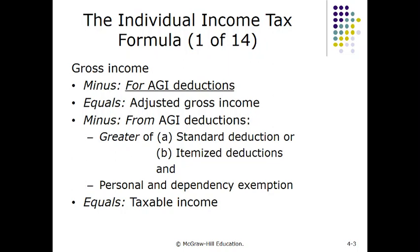From gross income, you deduct what are called for-AGI deductions. Gross income minus for-AGI deductions equals adjusted gross income. Then from adjusted gross income, you subtract from-AGI deductions, which consist of either the greater of the standard deduction or itemized deductions — we'll look at itemized deductions in Chapter 6 — plus personal and dependency exemptions.